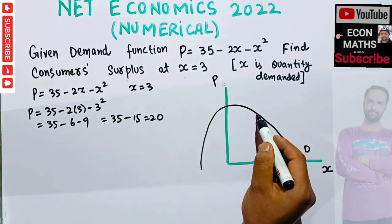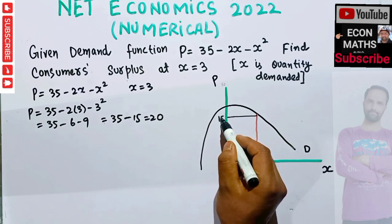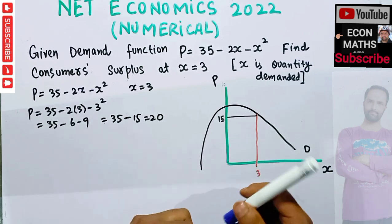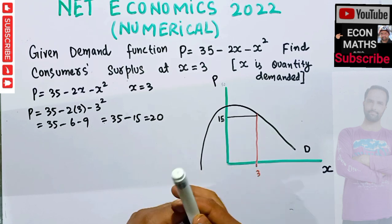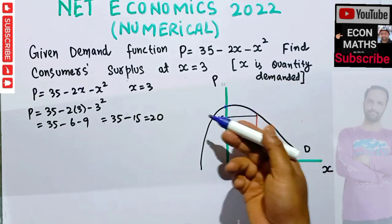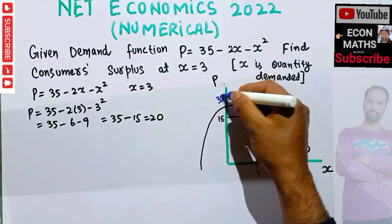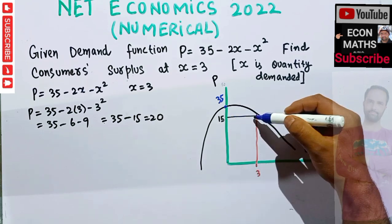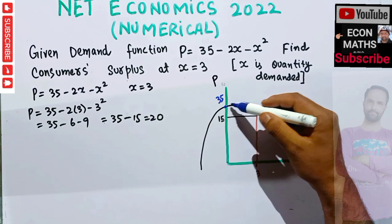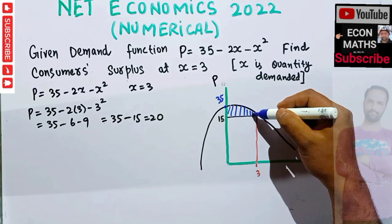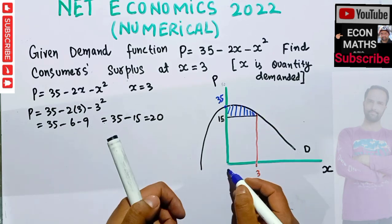That comes out to be 20, so corresponding to a quantity of 3 we have a price of 20. Consumer surplus is simply the difference between the price a consumer is willing to pay and the actual price paid. The intercept of the demand curve is 35, so the consumer surplus is the region above the equilibrium price and below the demand curve.